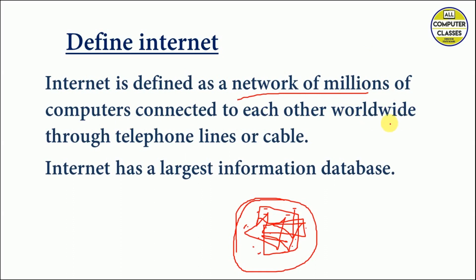How are they connected? They are connected through telephone lines or cable. So internet is defined as a network of millions of computers connected to each other worldwide through telephone lines or cable. There is one more point: internet has the largest information database.